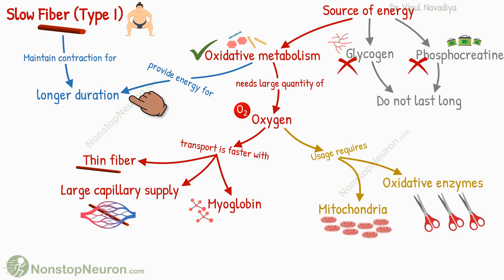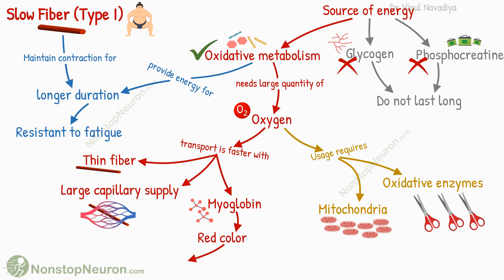As this machinery can supply ATPs for the long term, these fibers are resistant to fatigue. One last point: the presence of a large quantity of myoglobin gives these fibers a red color. So those were slow muscle fibers.